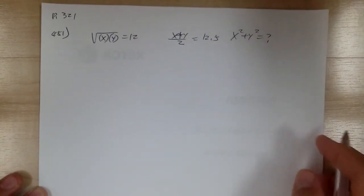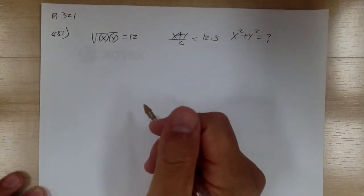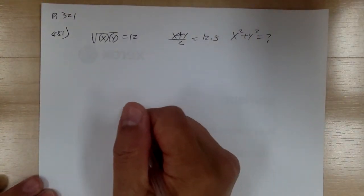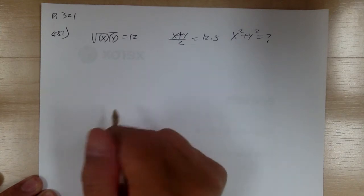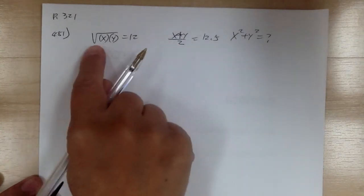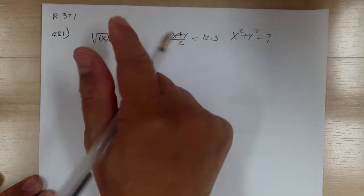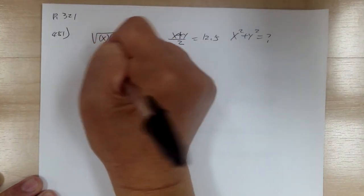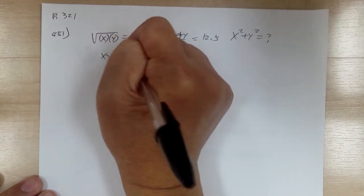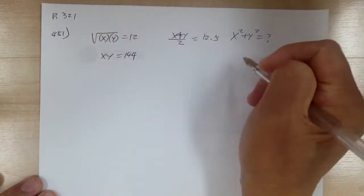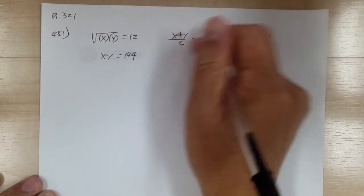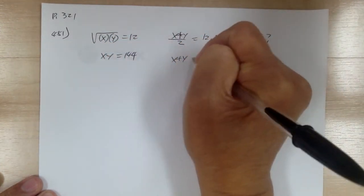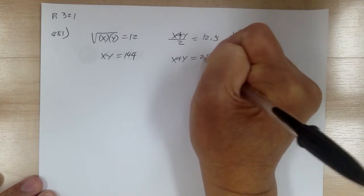For this type of problem, normally you don't want to solve individually because it gets messy. What you want to do is get rid of the square root — square both sides — so you get xy equal to 144. Over here, you cross-multiply: x plus y equal to 25.